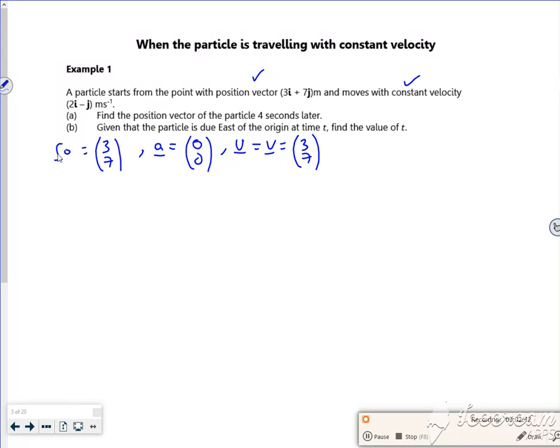Now it says find its position vector, so we've got an equation from the other side that says r equals r naught plus vt there. So r naught is (3, 7), v is—oh look at that, (1, 2). Did you spot that or did you just kind of go with me? I hope you spotted it. Sorry about that. (2, -1) there, (2, -1), and t is 4.